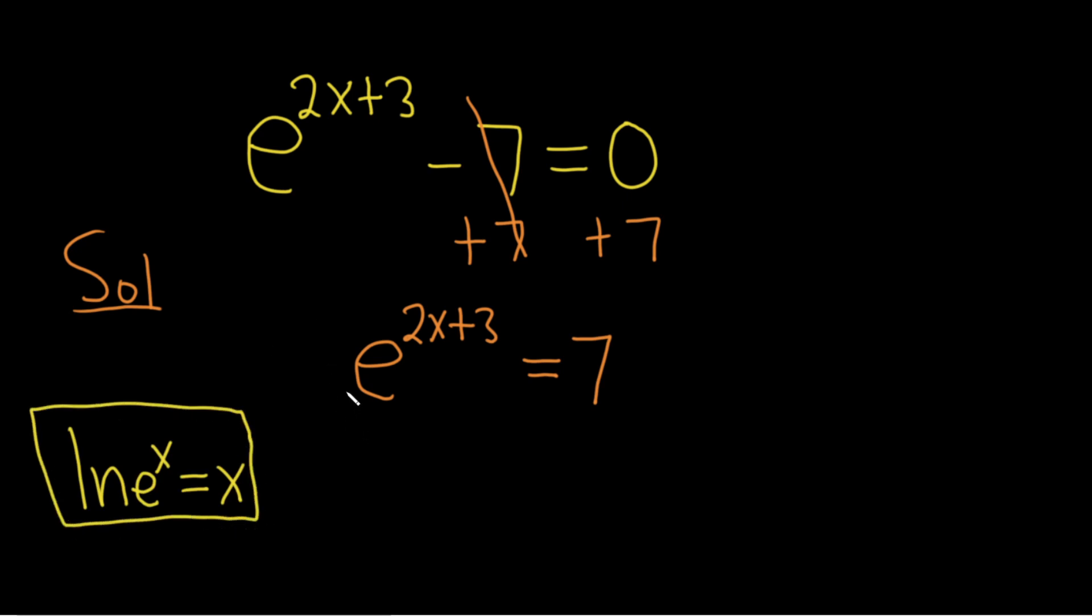So what we'll do now is we'll put an ln on both sides. Basically, we're taking the natural log of both sides of this equation. So we have the natural log of e to the 2x plus 3 equals the natural log of 7. And so now we can invoke this formula. So we're just left with this piece here, right? That's the same as our x. So we're left with 2x plus 3 equals the natural log of 7.